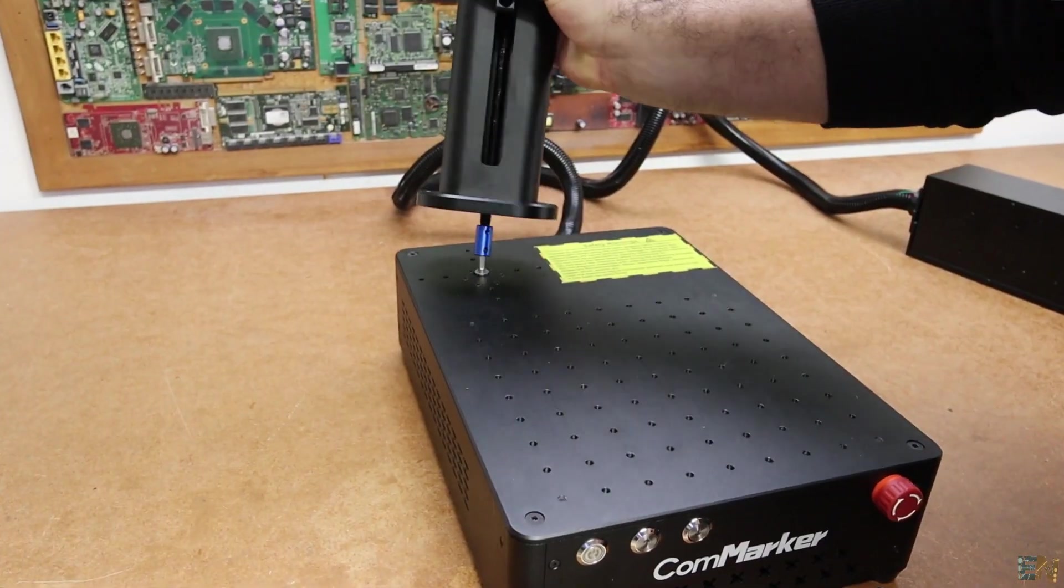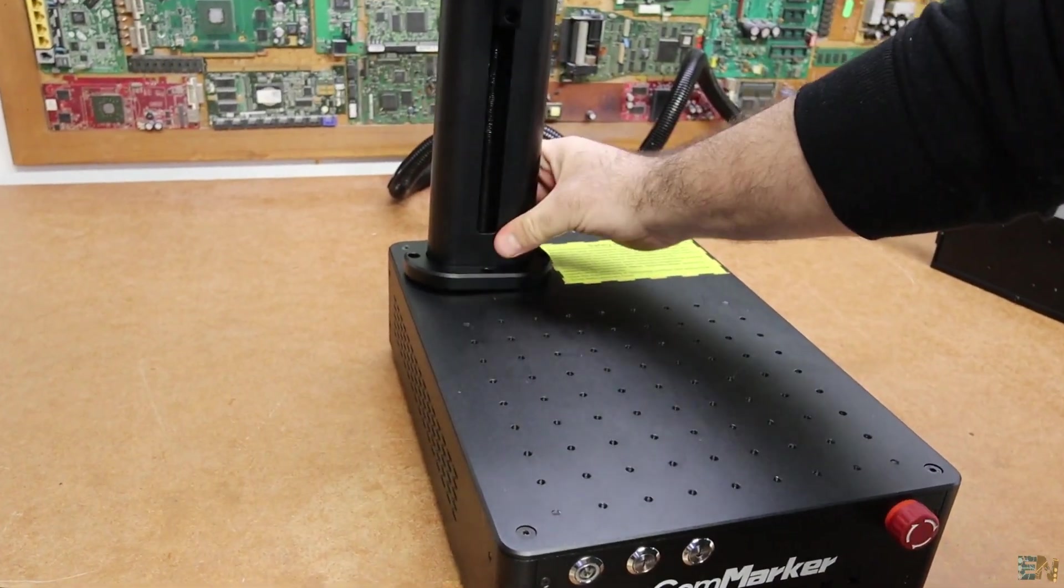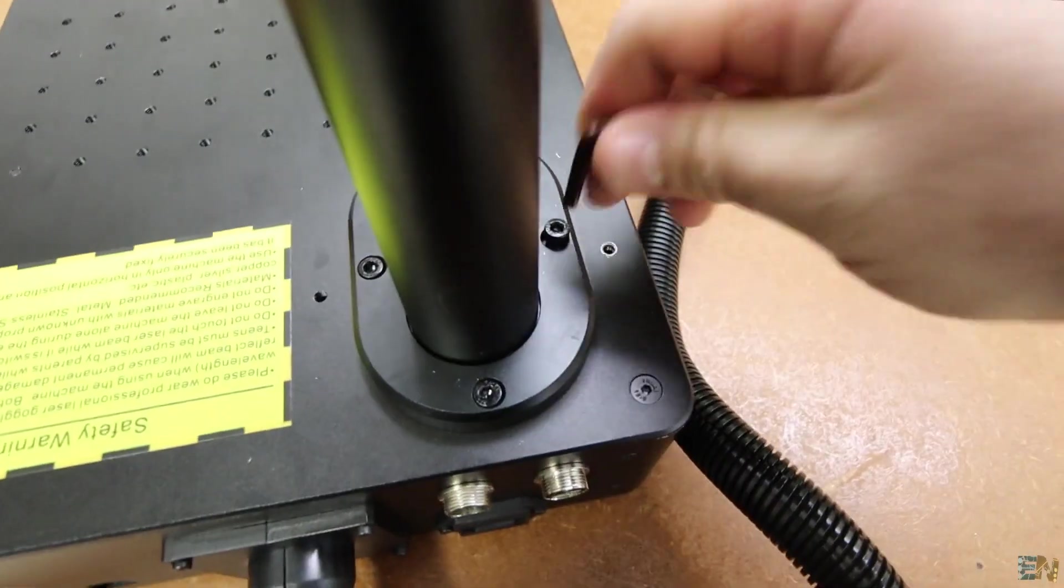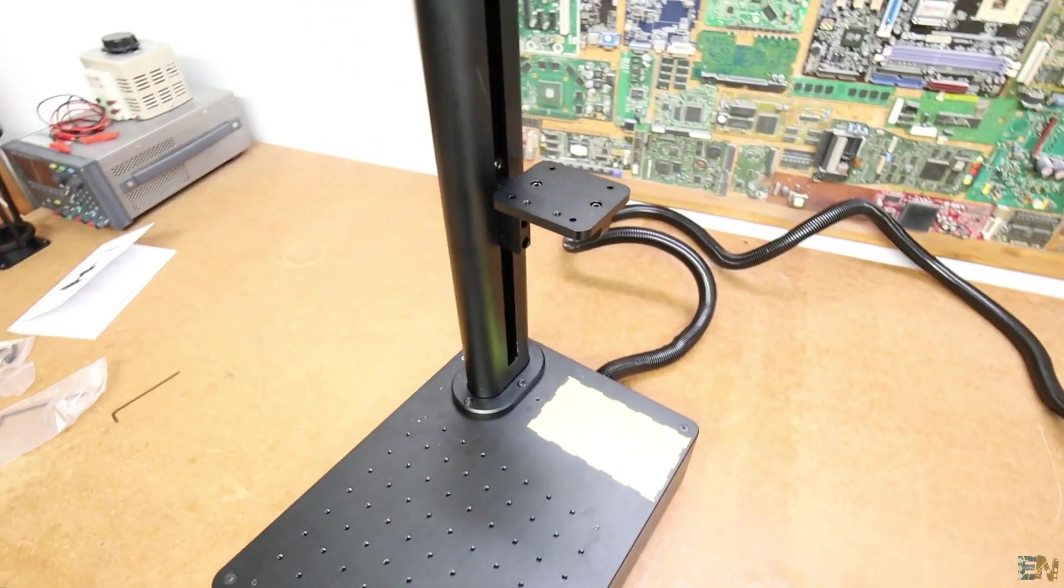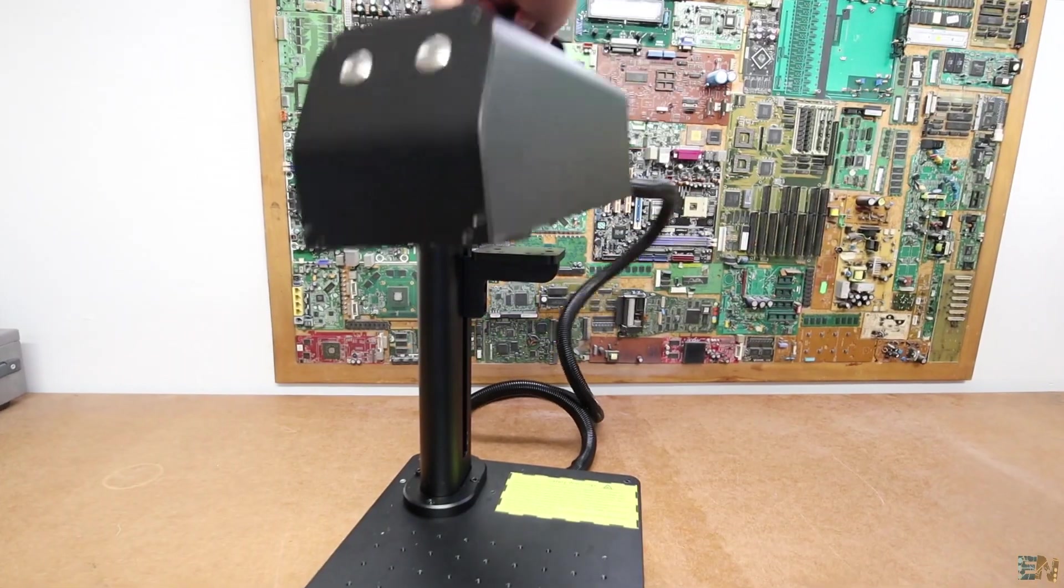Assembling the machine is very easy as placing the stand over the electronic box and add 4 screws. Then you attach the laser unit and that's it. In just a few minutes, the machine is ready.